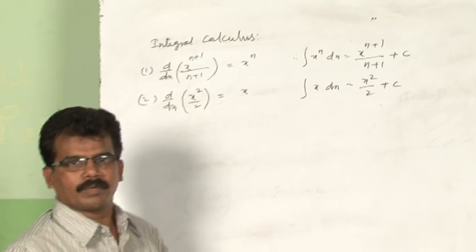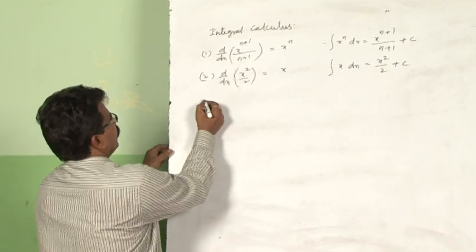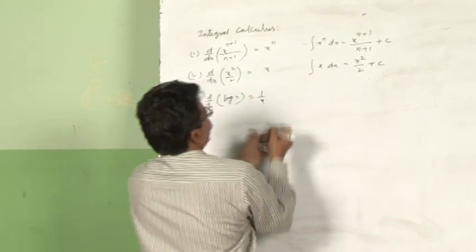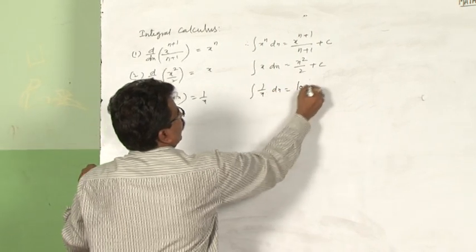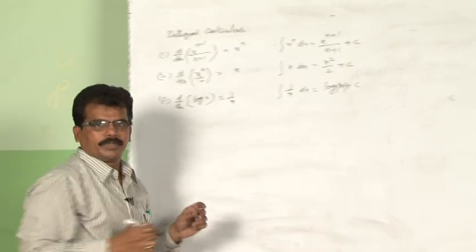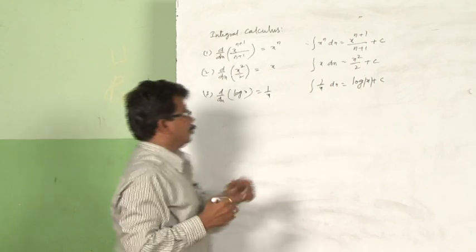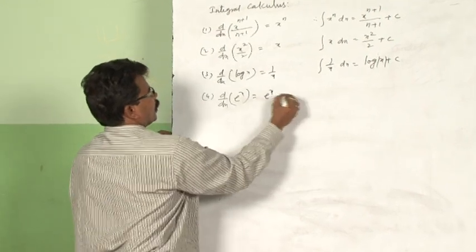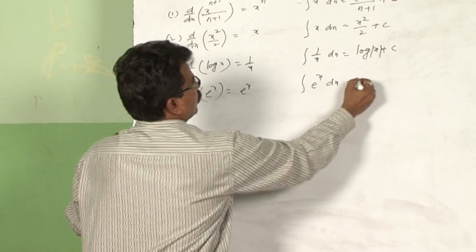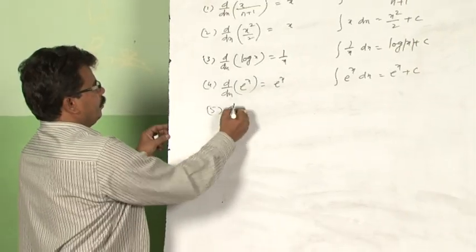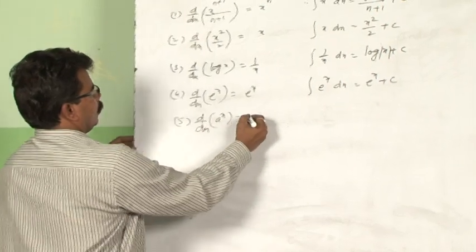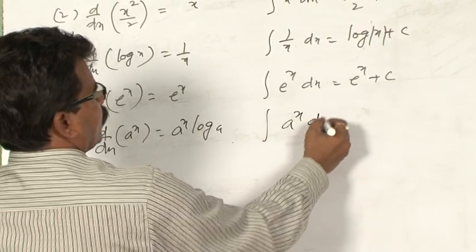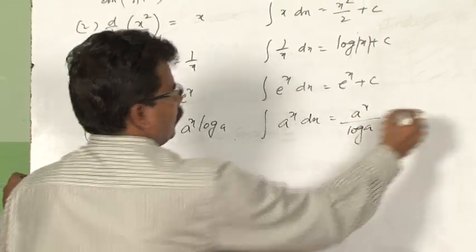Therefore, integral of (1/x) dx is equal to log|x| plus c. Be careful: we should take mod x because log of a negative number cannot be defined. Next, d by dx of e^x is equal to e^x, so integral of e^x dx is equal to e^x plus c. Next, d by dx of a^x is equal to a^x into log a. Therefore, integral of a^x dx is equal to a^x by log a plus c.